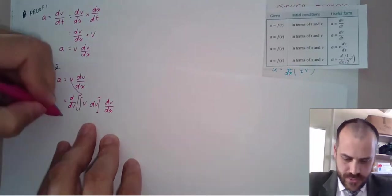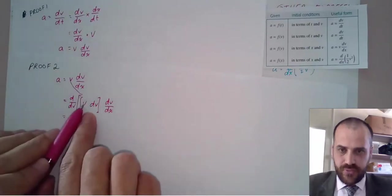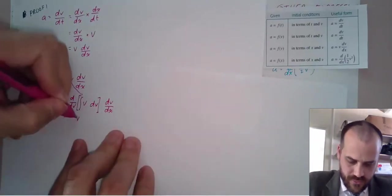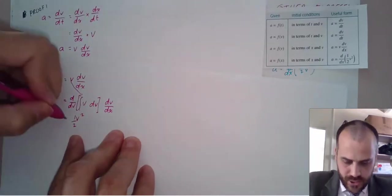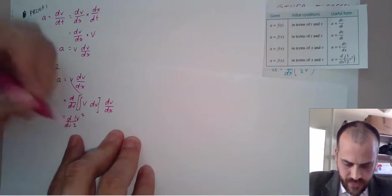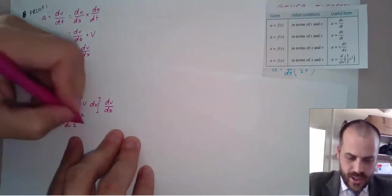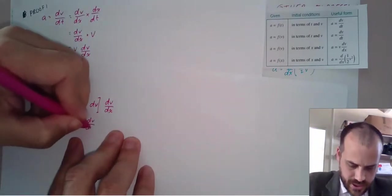Okay, now what happens? Well, the integral of V is V squared times 1 half. And I've got this D, DV hanging out the front here. And then I've got this DV, DX here.